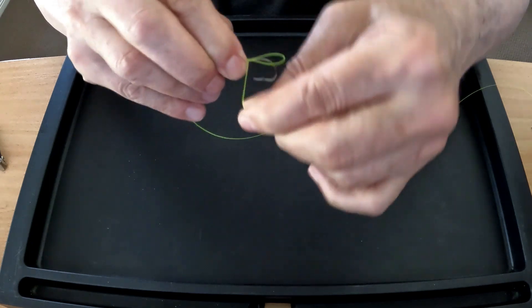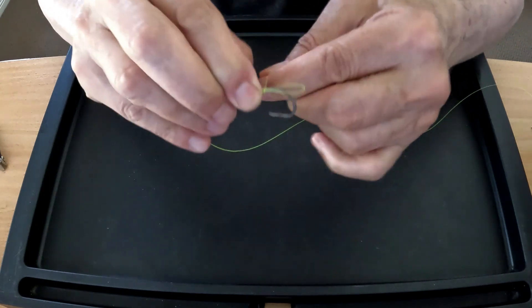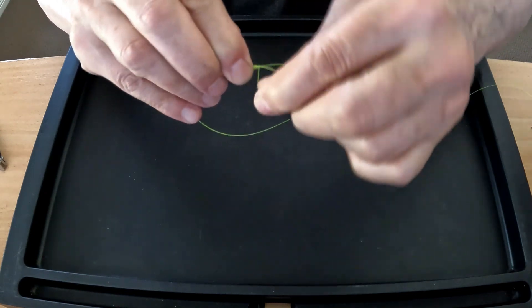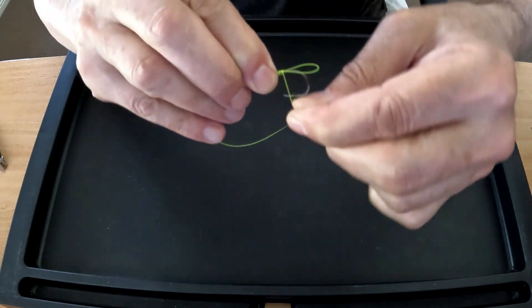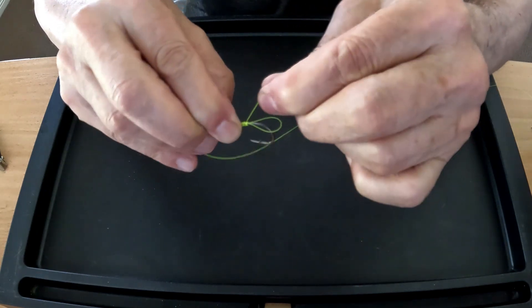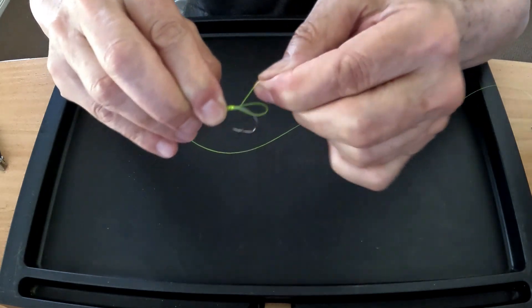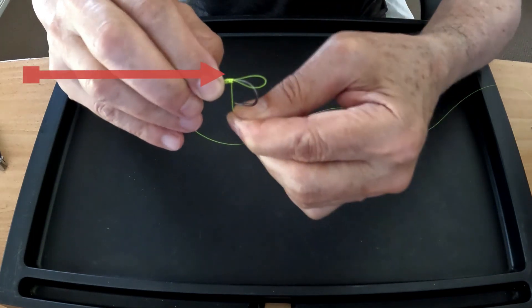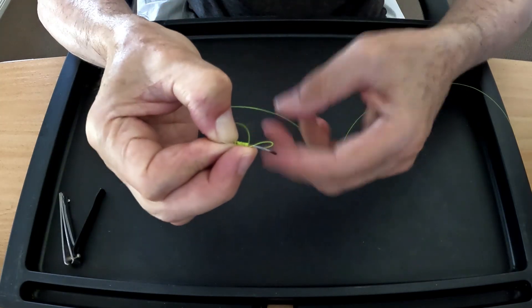Now, you want to do this probably about seven, eight, even ten times because what you're trying to do is bind that tightly. The number of wraps creates the strength of this knot, and I'm trying to run it in a line so it doesn't overlap itself as I run it up the shank.